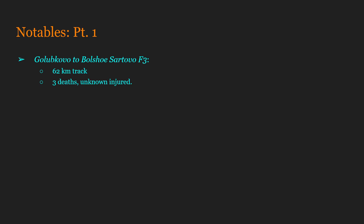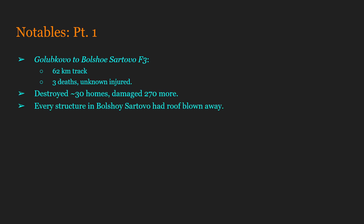Due to this transliteration, the names may also possibly be wrong in general. I'm just going off of what Wikipedia listed as the town names, so apologies for any errors. This F3 tracked 62 kilometers, caused three deaths, and an unknown number of injuries. It destroyed an estimated 30 homes and damaged 270 more, bringing a total of 300 structures affected. Every structure in Bolshoi Sartovo had its roof completely blown away. Interestingly, it was actually the smaller village of Malsoi Sartovo that was abandoned after this tornado.